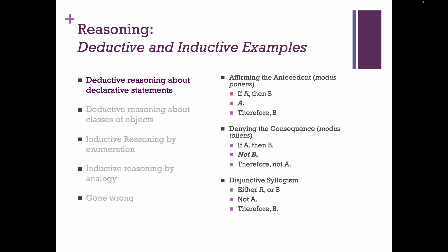A third example of deductive reasoning about declarative statements is called a disjunctive syllogism. Here's the first premise: 'Either A or B.' The second step is to say 'not A,' and so your conclusion has to be 'therefore B.' If it's not going to be A, then it has to be B because of that first premise. You could also switch it: 'Either A or B; not B; therefore A.' Either way works. Those are examples of deductive reasoning about declarative statements.